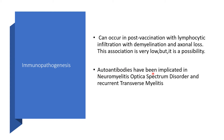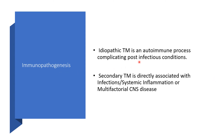Antibodies have been implicated in neuromyelitis optica spectrum disorder and in recurrent transverse myelitis. Idiopathic transverse myelitis is an autoimmune process complicating post-infectious conditions, meaning after an infectious condition has been treated, it could be complicated by an autoimmune process. Secondary transverse myelitis is directly associated with infection, systemic inflammation, or multifocal central nervous system disease.